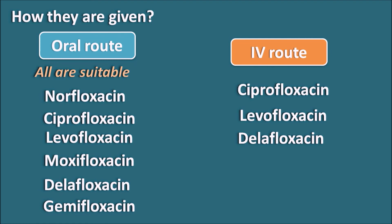2nd generation drugs include ciprofloxacin and norfloxacin, which are effective against gram-negative infections and atypical organisms, but not effective against Streptococcus and Staphylococcus. Ofloxacin is also a 2nd generation fluoroquinolone effective against Staphylococcus but not Streptococcus. 3rd generation is levofloxacin, the levo-isomer of ofloxacin, effective against both Staphylococcus and Streptococcus. 4th generation includes moxifloxacin, delafloxacin, and gemifloxacin, which are effective even against anaerobic organisms.